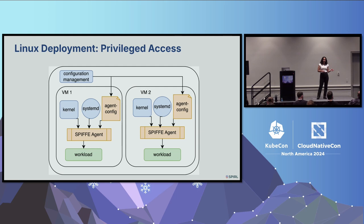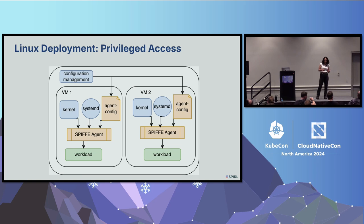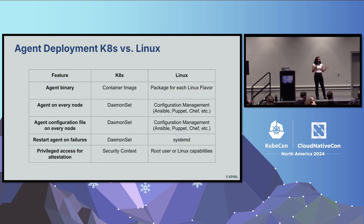If your agent crashes, configuration management won't fix that — you need something like systemd to restart it. For attestation in Linux, your agent typically talks to the kernel and needs to either run as root or run with Linux capabilities. Linux capabilities allow you to run your agent as a different user and give that user certain higher-privileged actions it can perform. So in summary, Kubernetes has built-in features like DaemonSets, container images, and security context, while Linux requires packaging your binary, configuration management, systemd, and Linux capabilities or root access.